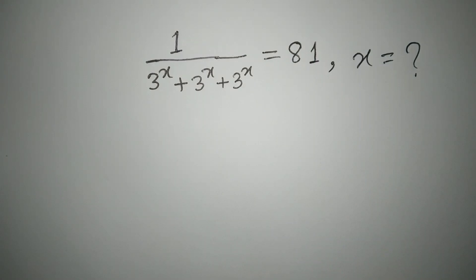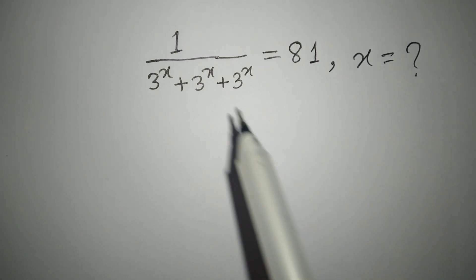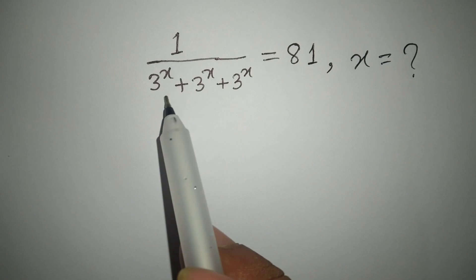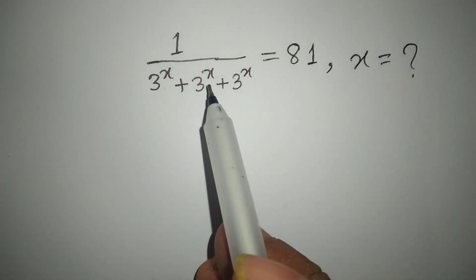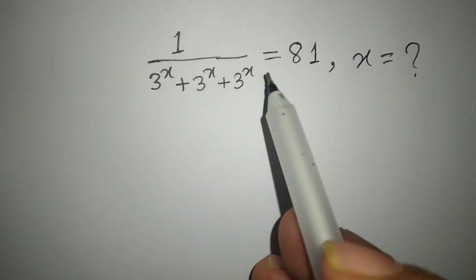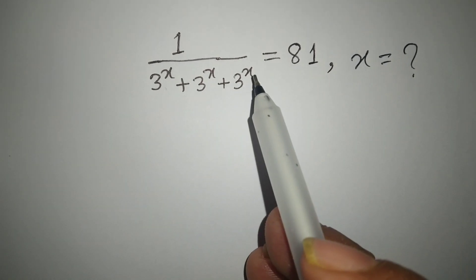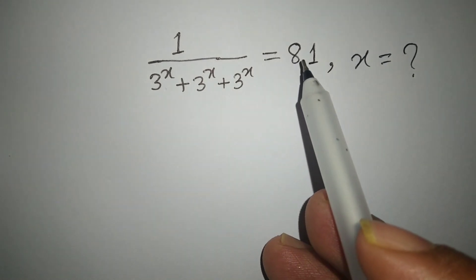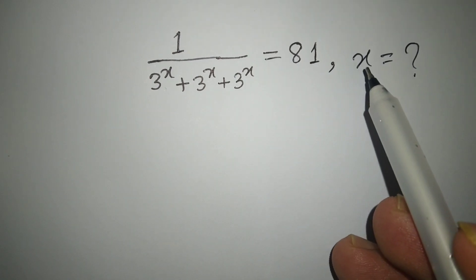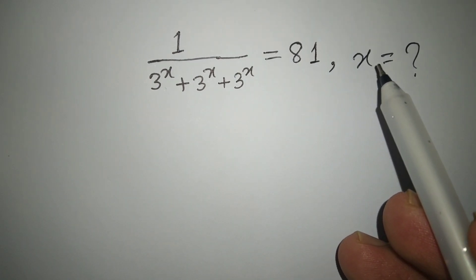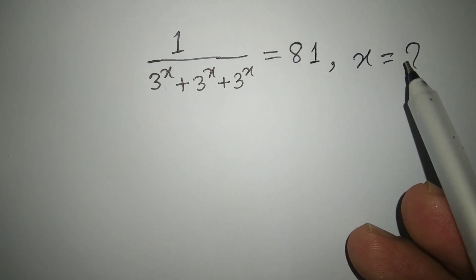Hi guys, today I am going to solve this math equation: 1 divided by 3 to the power x, plus 3 to the power x, plus 3 to the power x, equal 81. And what is the proper value of x?